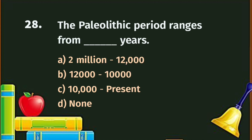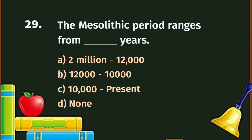Question number 28. The Paleolithic period ranges from how many years? A. Two million to twelve thousand years. The correct answer is A - two million to twelve thousand years. Question number 29. The Mesolithic period ranges from how many years? The correct answer is B - twelve thousand to ten thousand years.